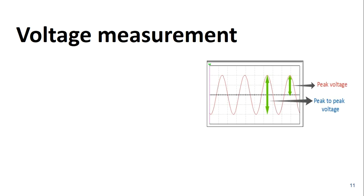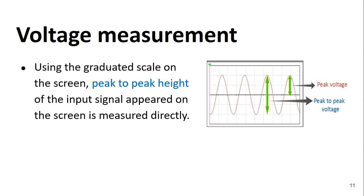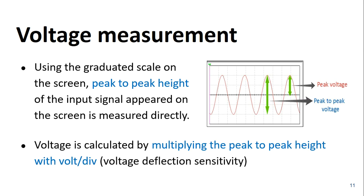Here you can see a picture of the waveform shown on the screen of a CRO. The peak voltage and peak to peak voltage are highlighted on the waveform. Using the graduated scale on the screen, peak to peak height of the input signal appeared on the screen is measured directly. Voltage is calculated by multiplying the peak to peak height with the volt per division. From this we get the peak to peak voltage V0. Then the RMS voltage is calculated and verified with the value measured by multimeter.